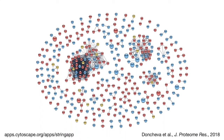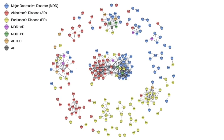Another thing you can use the STRING app for is disease comparison. You have a set of diseases, go to the DISEASES database and get sets of genes for each disease, pull in the networks, merge them, lay out and cluster the combined network, and color genes based on which disease or diseases they're involved in. For example, I looked at major depressive disorder, Alzheimer's disease, and Parkinson's disease — including the relatively few genes involved in all of them. Laying out the network based on coloring gives a pretty neat overview very quickly, showing the possible relationships between diseases, their differences and commonalities.